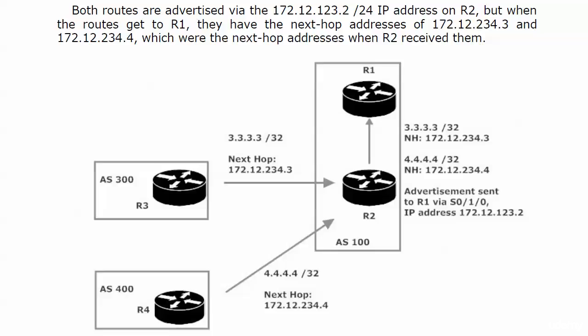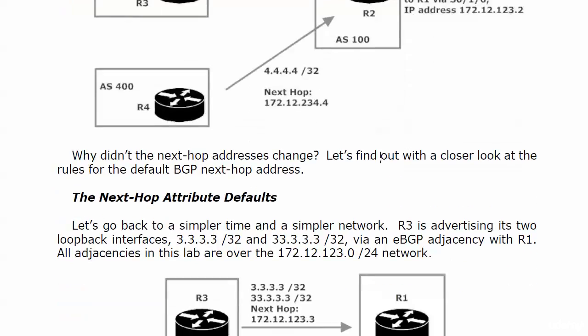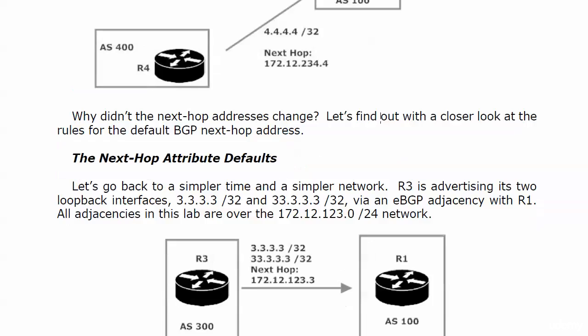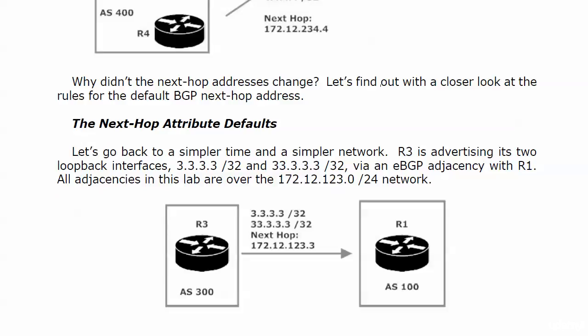Here's that simpler network I was referring to. This is another reason I wanted to cut this lesson into two videos, because I needed to set up a separate lab to show you the next-hop attribute default and that calculation that we saw the IOS mentioned.